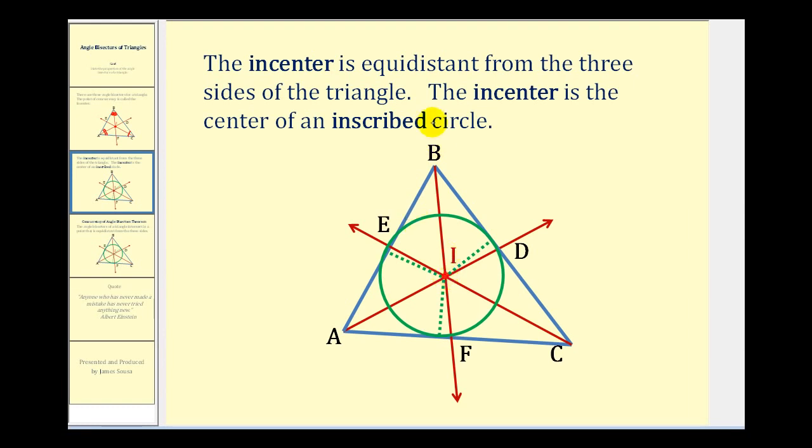This incenter is equidistant from the three sides of the triangle. Remember, when we refer to distance from a point to a segment, the distance would be the length of the segment that's perpendicular to the segment. So this would be a right angle here, this would be a right angle here, and this would be a right angle here.